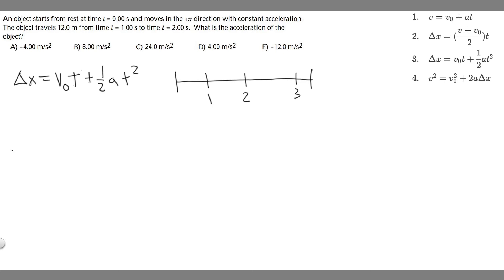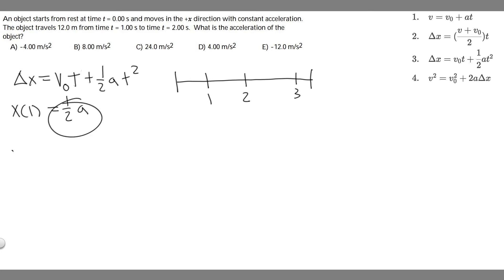Let's plug in x sub 1 first. Keep in mind the object starts from rest, so v sub 0 is 0. Zero times 1 is just 0, so the equation reduces to one half at squared. With t equals 1, one squared is 1, so x sub 1 is simply one half a.